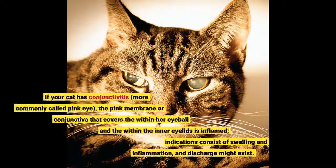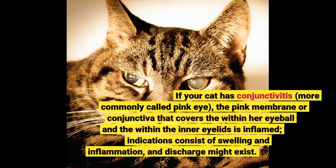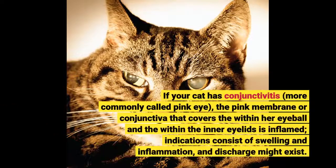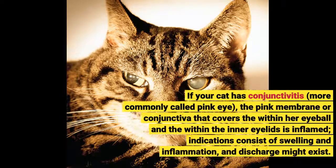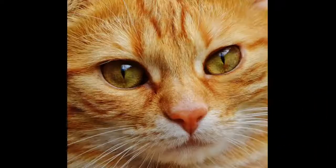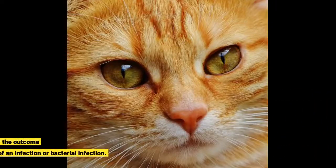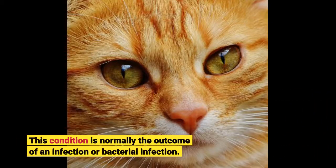If your cat has conjunctivitis, more commonly called pink eye, the pink membrane or conjunctiva that covers the inside of her eyeball and the inner eyelids is inflamed. Indications consist of swelling and inflammation, and discharge might exist. This condition is normally the result of a viral or bacterial infection.